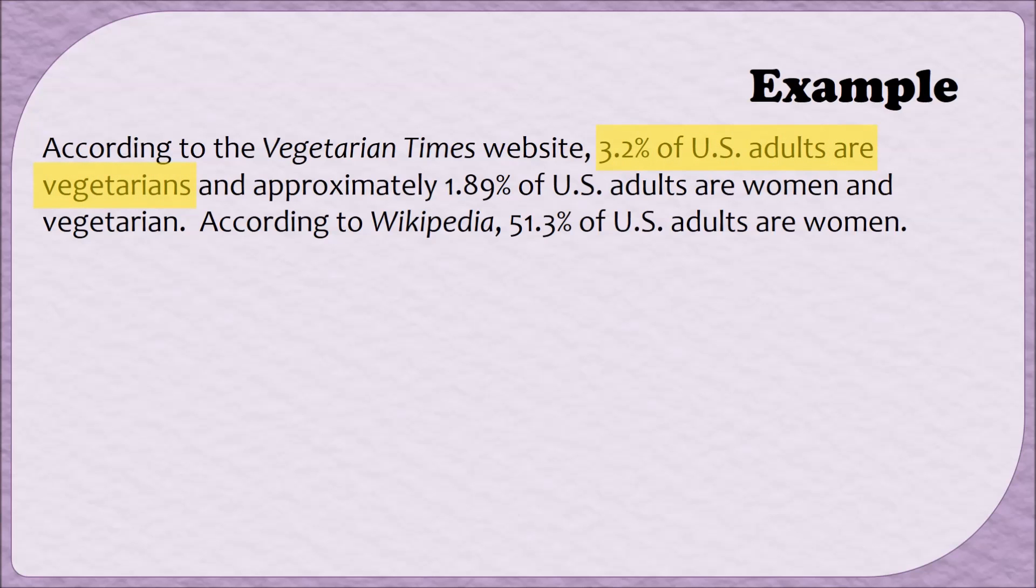In this case, when I read that 3.2% of U.S. adults are vegetarians, I'm going to summarize that by saying the probability of V is 0.032. I'm using V here to help me remember that this is for vegetarians and I turned that 3.2% into 0.032 into the decimal form. The next piece of information that we were told is that 1.89% of U.S. adults are women and vegetarian. Notice that we've now been told a compound event. In this case, that 1.89% refers to individuals who are both women and they are vegetarian. So I can summarize this information by saying the probability of W and V is 0.0189. I'm using W for women and continuing to use V for vegetarian. Lastly, we've been told that 51.3% of U.S. adults are women. Since I've already used W for women, I'm going to summarize this by saying the probability of W is 0.513.